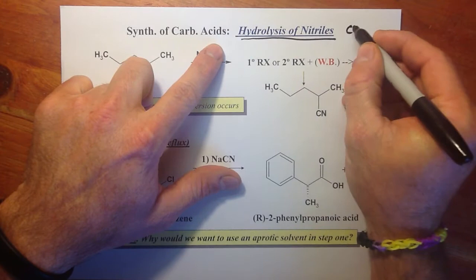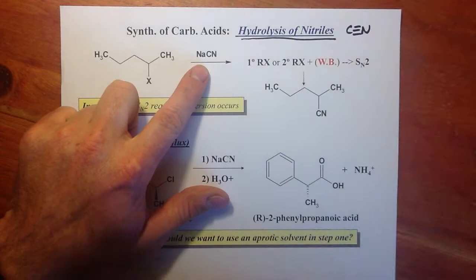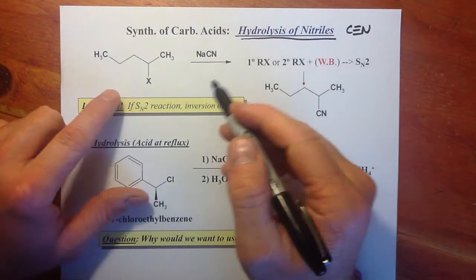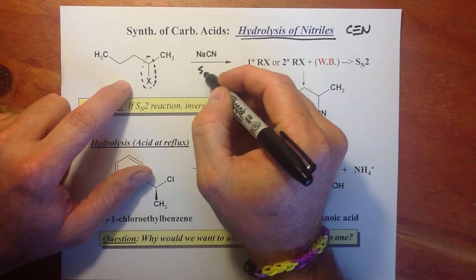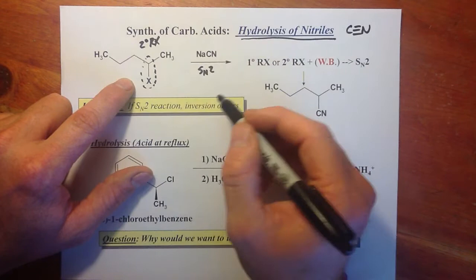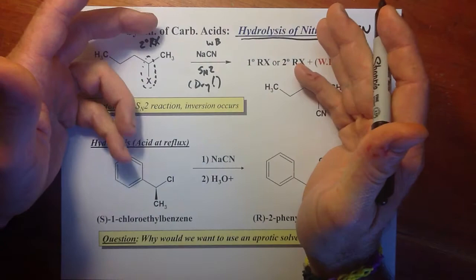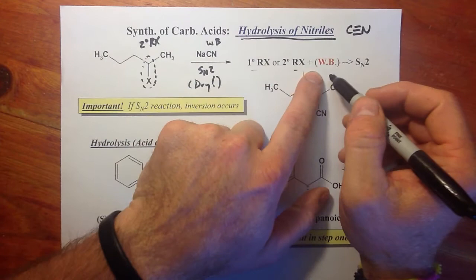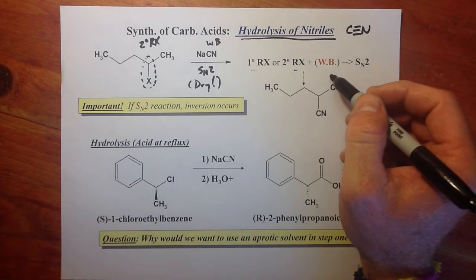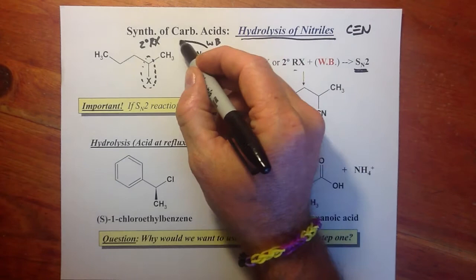We can also have hydrolysis of nitriles. Nitriles are cyano groups — C≡N triple bonds. We can make a nitrile by first running an SN2 reaction with a weak base and a secondary RX. To favor SN2, the solution must be dry — no water. Secondary RXs with a weak base in dry conditions tend to give SN2 products.